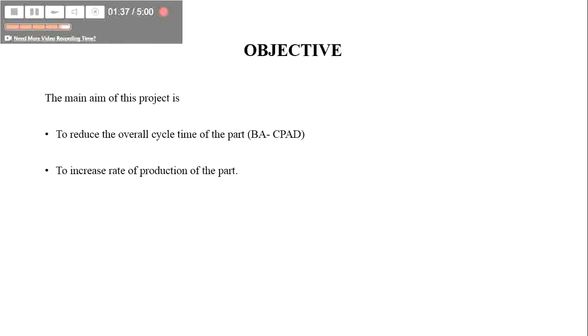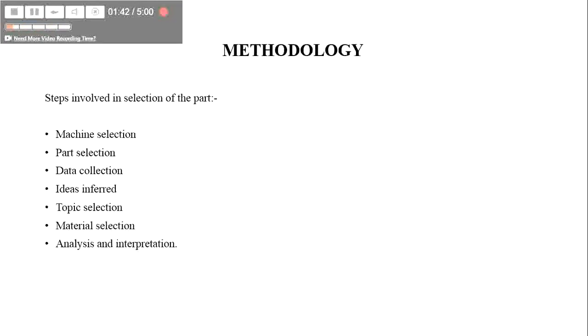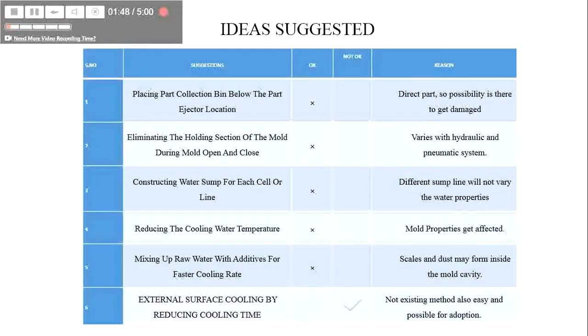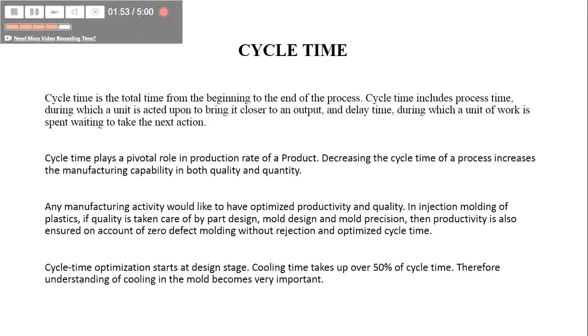The main objective of this project is to reduce the overall cycle time and to increase the rate of production of the part. These are the steps that occur through the methodology, arriving at the important aspect: cycle time.